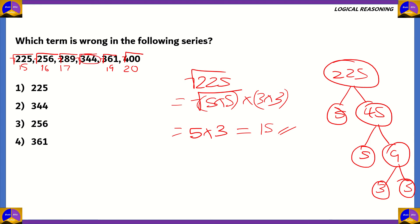So we don't have a square root for 344. As you can see in the pattern, the square root of 225 is 15, for 256 it's 16, for 289 it's 17. So instead of 344, we must have 18² in its place, and the pattern continues: square root of 361 is 19, and square root of 400 is 20. So instead of 344, there must be 18² (which is 324). That means the term which is wrong in the series is option number 2, 344, since it doesn't form a perfect square.